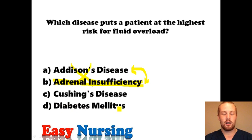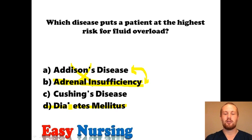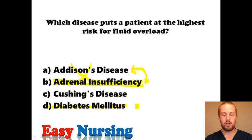And diabetes mellitus — this has to do with blood sugars. A diabetic is more likely to be at risk for dehydration, because when you have lots of sugar in the body, the kidneys start expelling the sugar in your urine, so you're losing sugar and water. So the answer we're looking for is Cushing's.